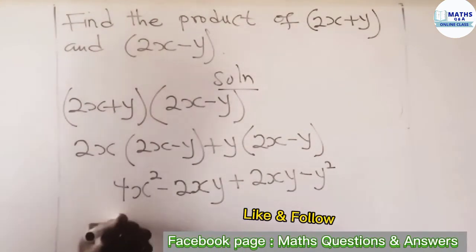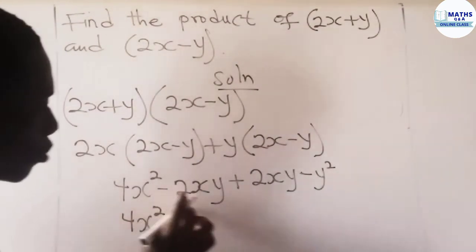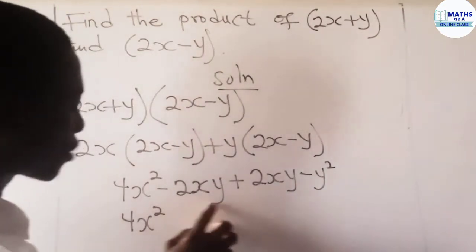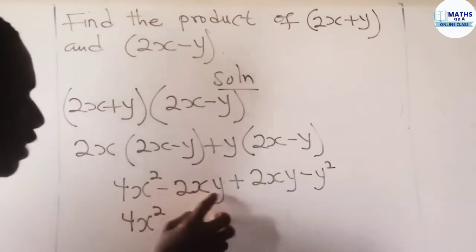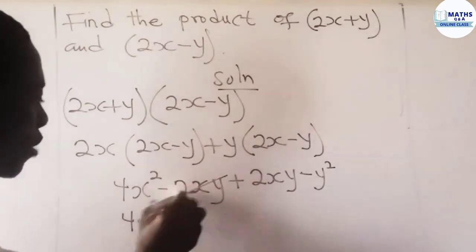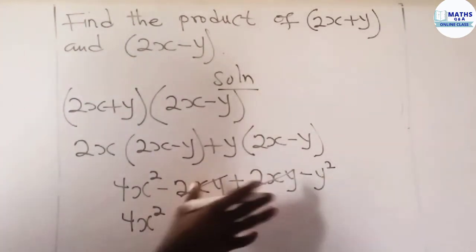Now we have 4x squared. There is no other x squared term, so we move to the xy. We have negative 2xy plus 2xy. These cancel out and become zero.